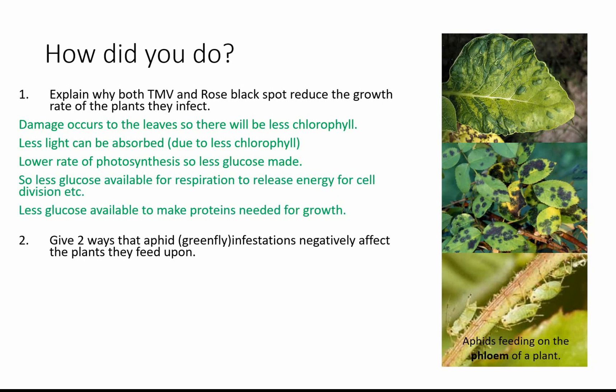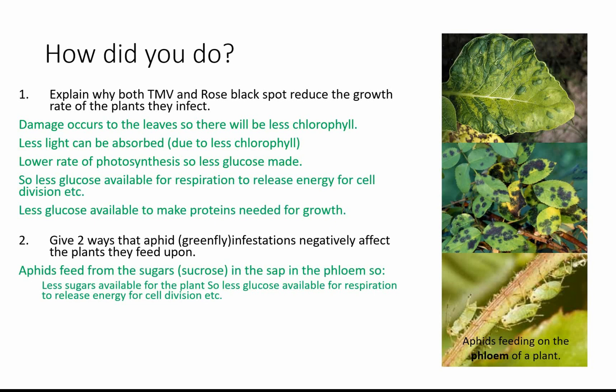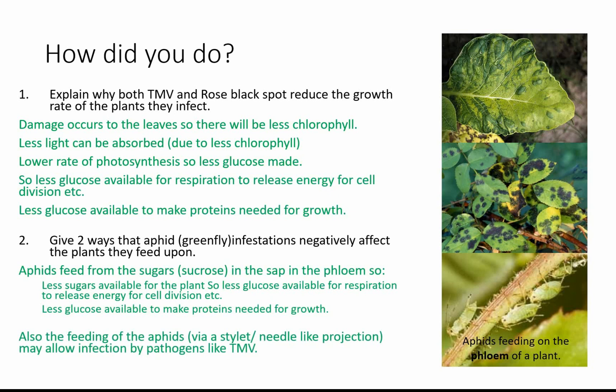For aphids: they're feeding on the sucrose transported in the phloem, so there's less sugar available for the plant. Again, less glucose is available for respiration to release energy for cell division, and for making proteins, cellulose cell walls, and so on — meaning a slower rate of growth. Also, the way aphids feed is like a mosquito: they inject a stylet through the physical barriers of the plant, which means other pathogens — TMV, bacterial or fungal infections — can get in that way, which links back to question one.